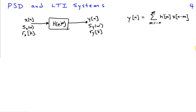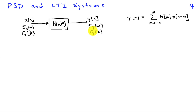The power spectral density has a very interesting interaction with linear time invariant systems. Here, a random process x of n is passed through an LTI system with frequency response H of e to the j omega to obtain an output random process y of n. If the input has power spectrum S_x of omega corresponding to correlation sequence r_x of k, the question is how the output power spectrum and correlation relate to those of the input.